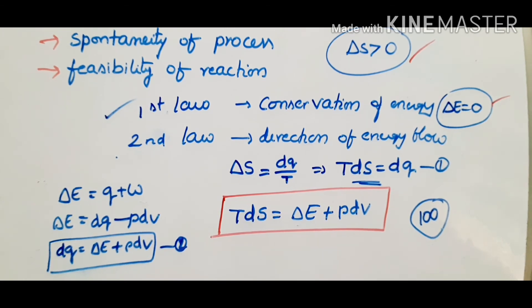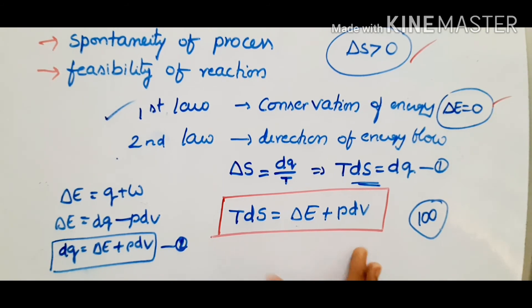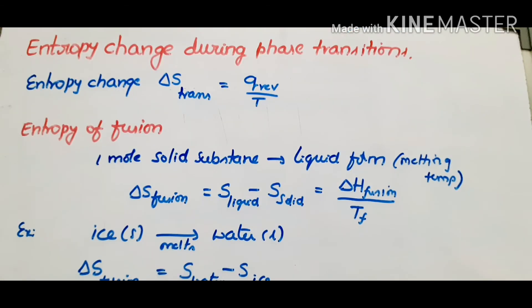This is all about the second law of thermodynamics and its mathematical expression. The second law deals with the spontaneity of a process or reaction. The next topic is entropy change during phase transformations. Entropy changes in different processes were covered in earlier videos, but review them and come back — it will make the second law easier. Now we focus on entropy change during phase transitions.